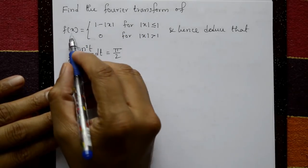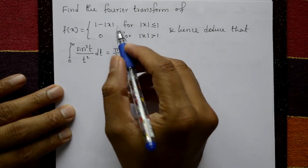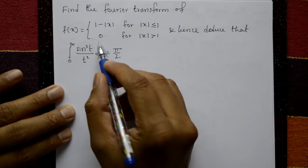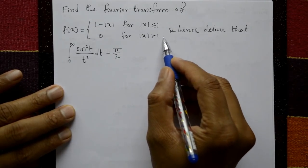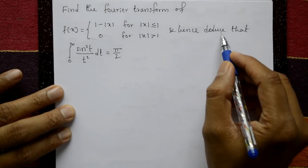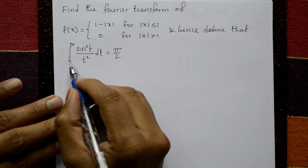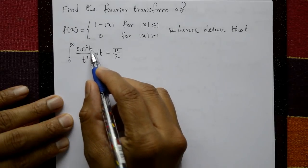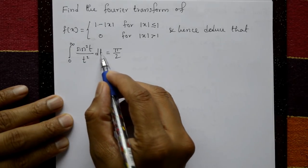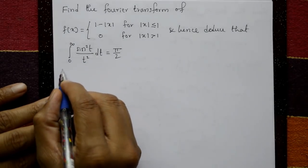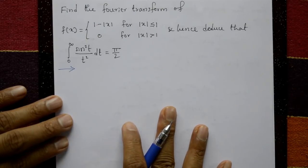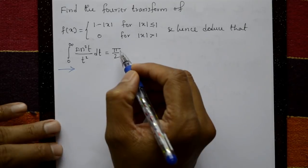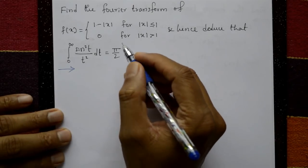Find the Fourier transform of f(x) = 1 minus mod x for mod x less than or equal to 1, and zero for mod x greater than 1. Hence deduce that the integration from zero to infinity of sin²t by t² with respect to t is equal to π/2.